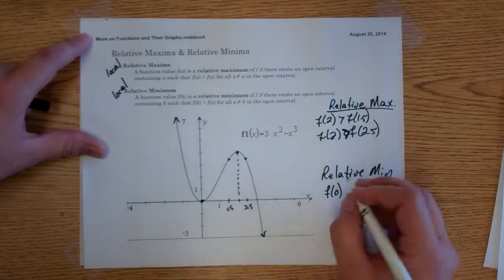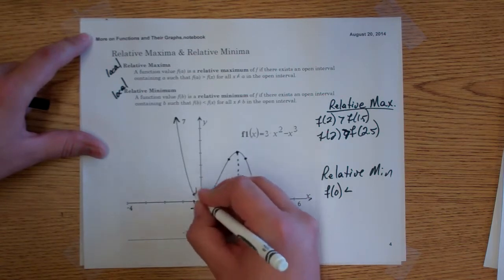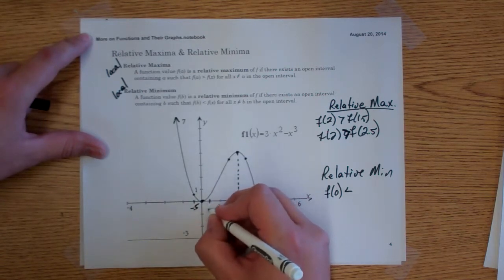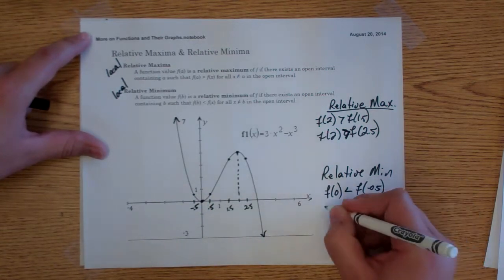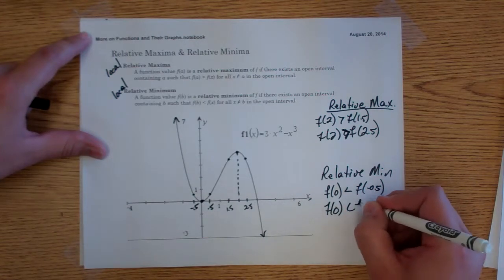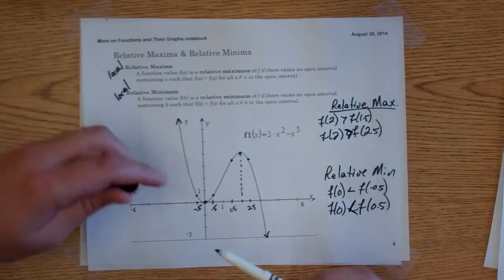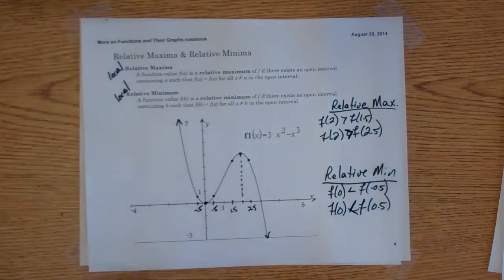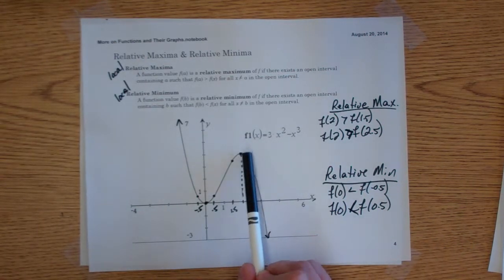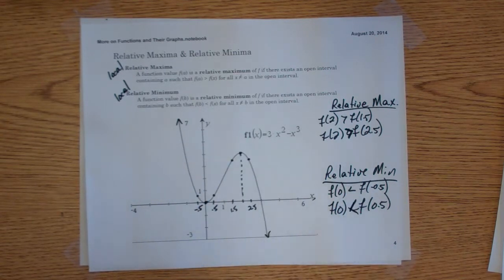Relative minimum works the same way. At f(0), immediately to the left and to the right, this point is lower than any value around it in this area. For example, f(negative 0.5) has a higher y value, and f(0.5) also has a higher y value, so f(0) is less than f(0.5). A point that is lower than the ones around it is a relative minimum. A point that is higher than the ones around it is a relative maximum.